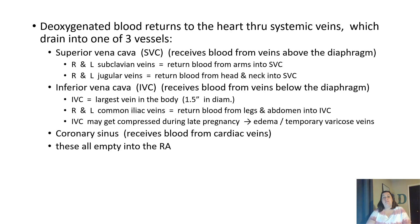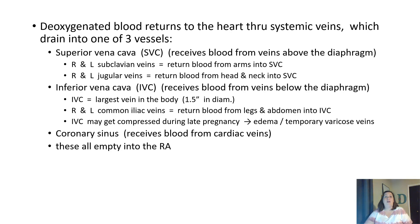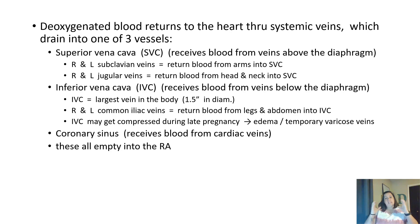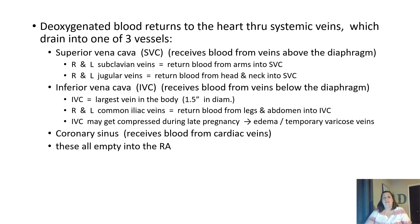The inferior vena cava, known as the IVC, receives blood from the veins below the diaphragm. The IVC is the largest vessel in the body, about an inch and a half in diameter. The right and left common iliac veins bring blood up from the legs and merge into the abdominal IVC. The IVC may get compressed during pregnancy, causing edema and swelling in the legs and feet, and sometimes temporary varicose veins. The last blood drains back to the heart through the coronary sinus on the back of the heart.